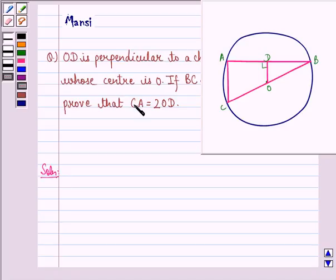We have to prove that CA is equal to twice of OD. Now first of all, we joined A to C.